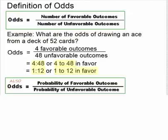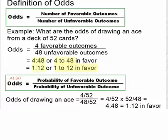We can also define odds in the following way: odds equals the probability of a favorable outcome divided by the probability of an unfavorable outcome. In the previous problem, the probability of the favorable outcome was 4 out of 52 because there are 4 aces in a deck of 52, so we have 4/52 in the numerator. The probability of the unfavorable outcome was 48 out of 52 because there are 48 cards that are not an ace.